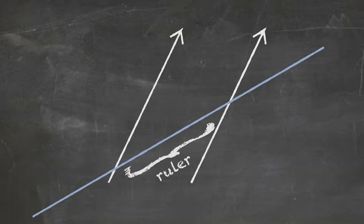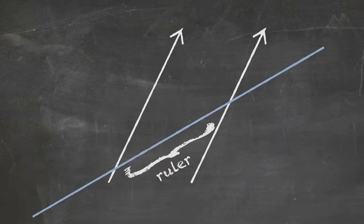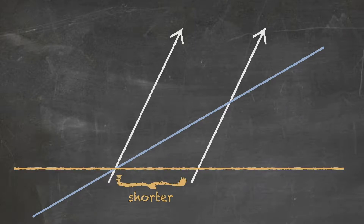As before, the ruler is just the space between the two ends, but now the hypersurface corresponding to that ruler is tilted. So the moving observer says that this tilted length is 30 centimeters. But for the observer on Earth, the length between those two ends is less than 30 centimeters. The ruler has gotten shorter.